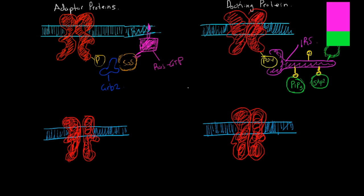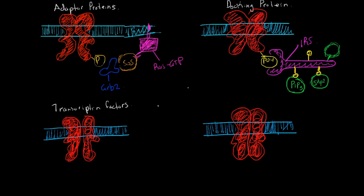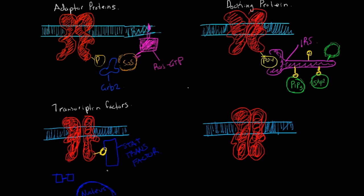Next we have transcription factors, which are members of the STAT family. Once again, there is a phosphate group on this molecule that will activate the STAT transcription factor. There are two STAT molecules that become activated, forming a STAT dimer. They will then go into the nucleus and act as transcription factors, turning on genes that are supposed to make stuff.